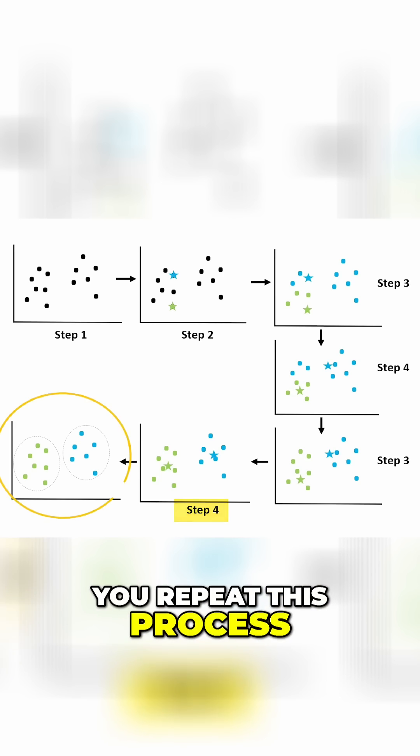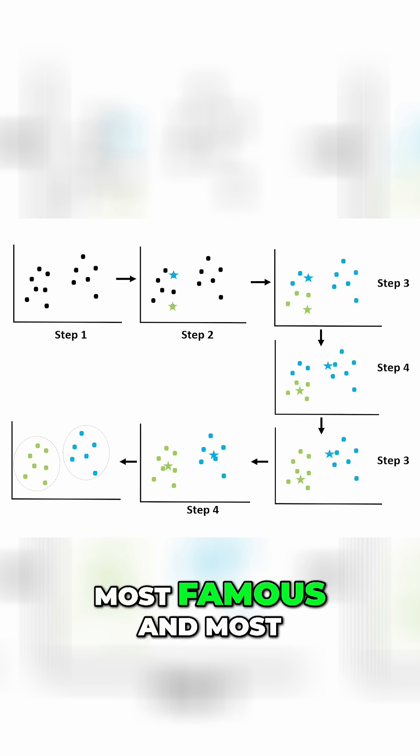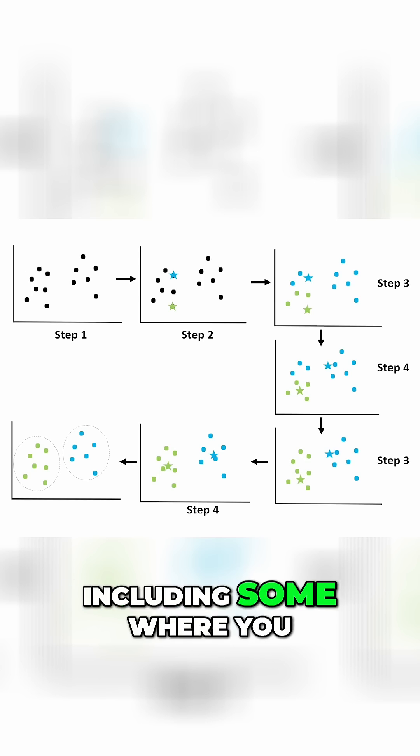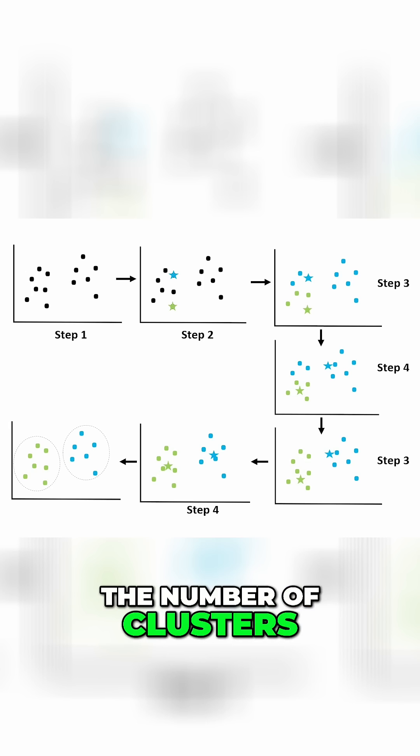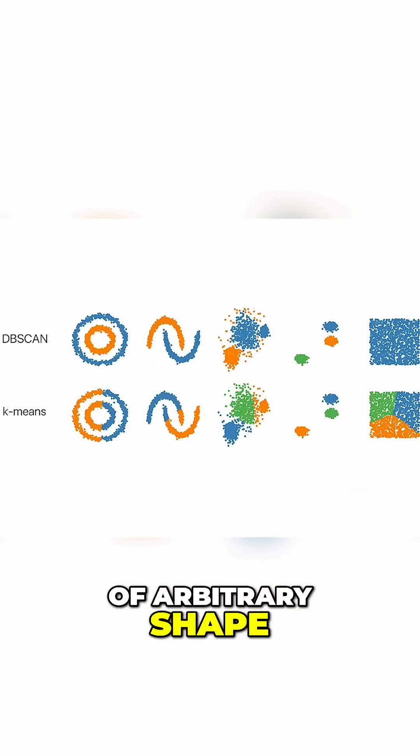You repeat this process until the centers of the clusters have stabilized. While k-means is the most famous and most common clustering algorithm, other algorithms exist, including some where you don't need to specify the number of clusters, like hierarchical clustering and DBSCAN, which can find clusters of arbitrary shape, but I won't discuss them here.